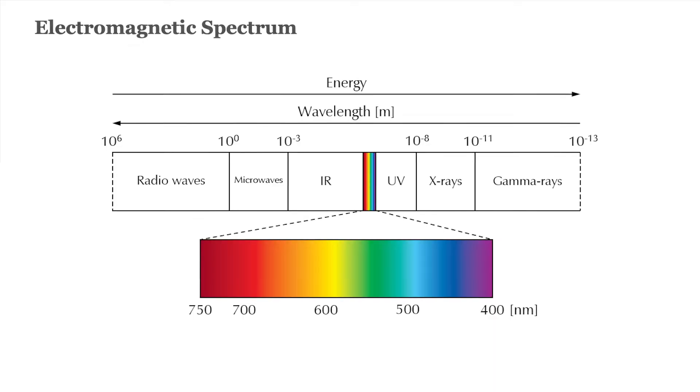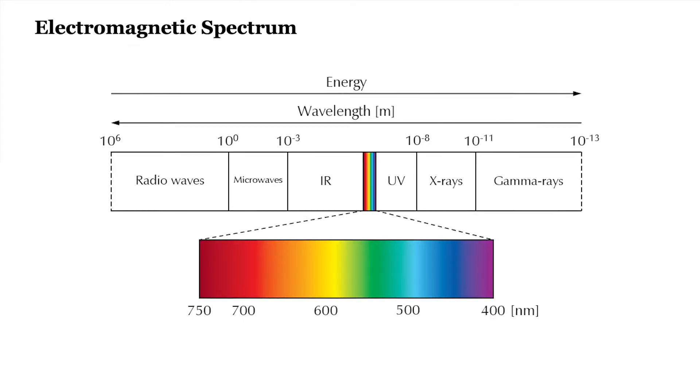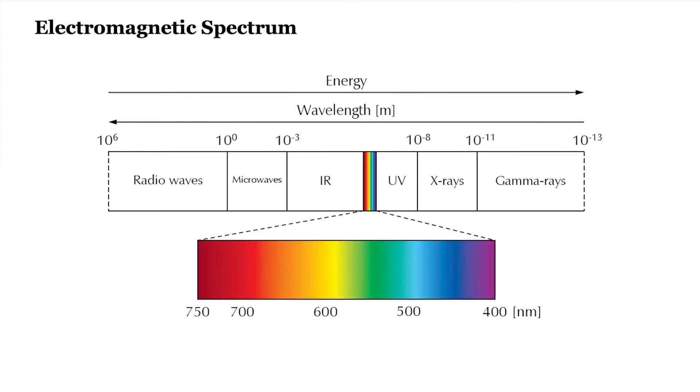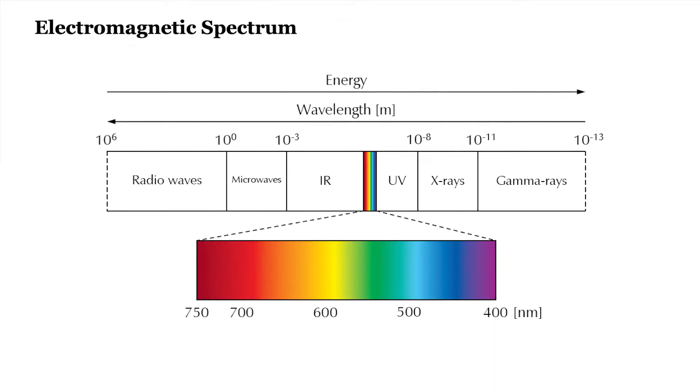We're in the Mix family home today. We're going to be talking about what an 18th century Moravian like Henrietta Mix would have known about light waves — how to harness them, how to use them. Light waves, as you may know, are part of the electromagnetic spectrum. The light waves we're going to be talking about today are visible light waves, the part of the electromagnetic spectrum that we can see.